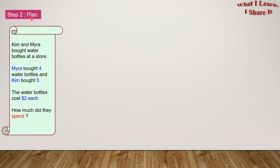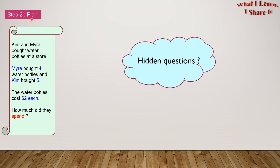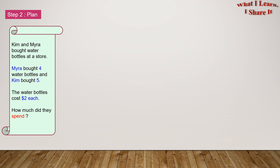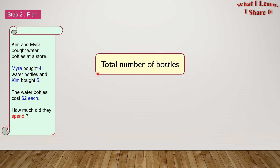Step two: Plan. So what are the hidden questions here? We have to find out how much Kim and Myra spent altogether, and we also know that the water bottles cost two dollars. But do we know how many water bottles Myra and Kim bought altogether? No! So this is our hidden question: the total number of bottles.